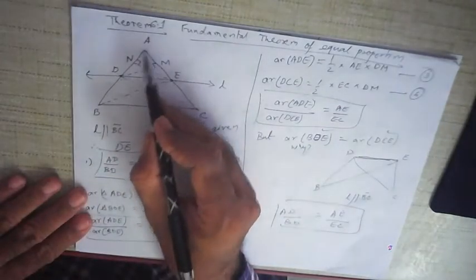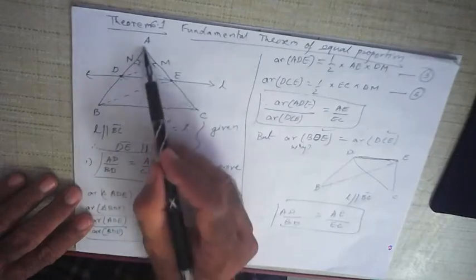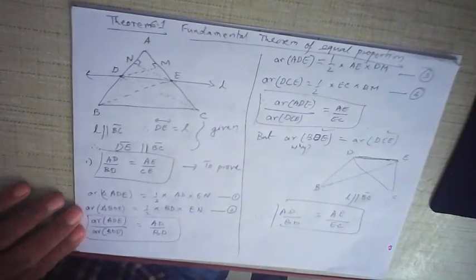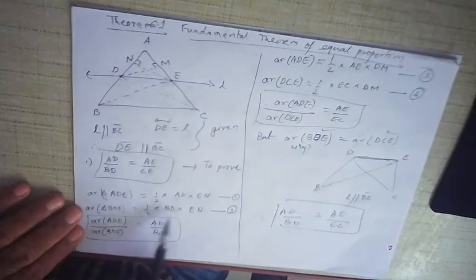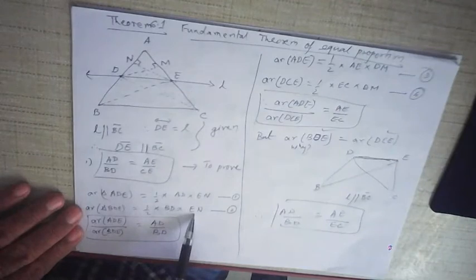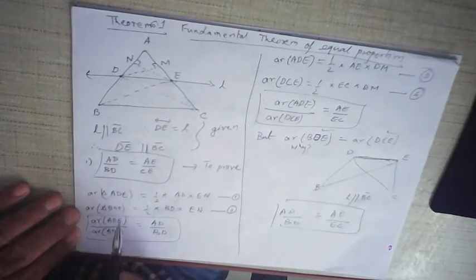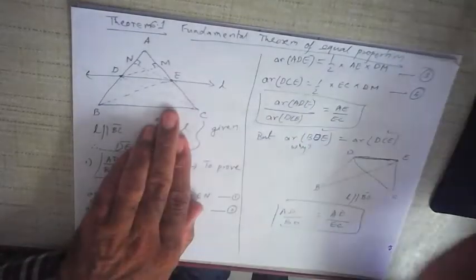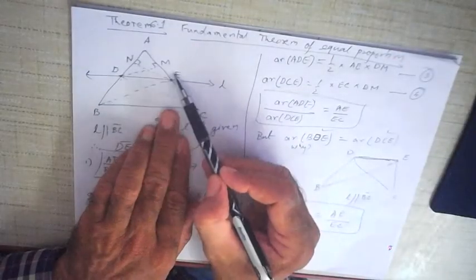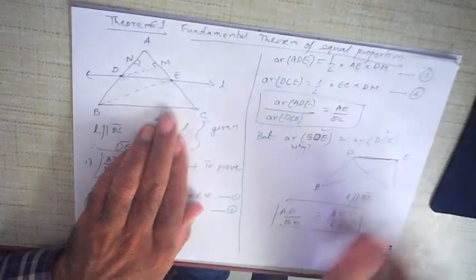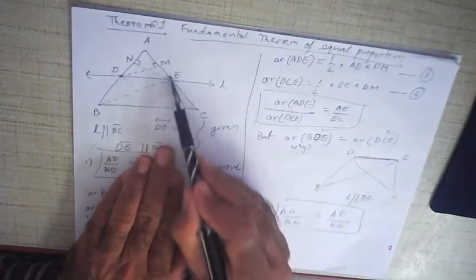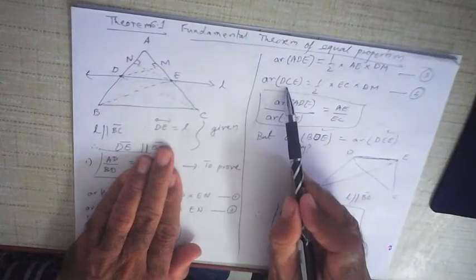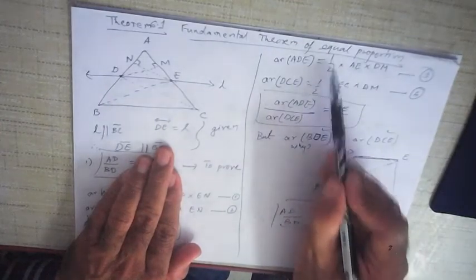We draw altitudes EN and DM. Area of triangle ADE = (1/2) × AD × EN. Area of triangle BDE = (1/2) × BD × EN. Taking the ratio, EN and the half cancel out, giving AD/BD. Similarly, area of triangle ADE = (1/2) × AE × DM, and area of triangle DEC = (1/2) × EC × DM. Taking that ratio, half and DM cancel out, giving AE/EC.